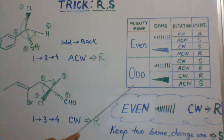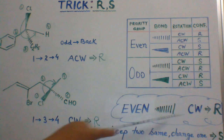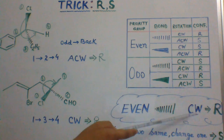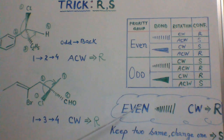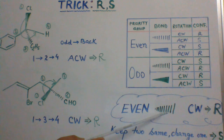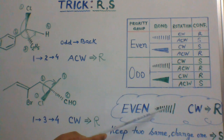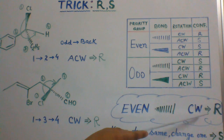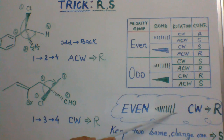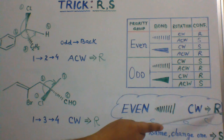Remembering this table is very easy. You just have to remember this: even, thin line, clockwise, R. It means if the even priority group is below the plane of the board and connecting all other priority groups gives clockwise movement, then the stereogenic center gets configuration R.